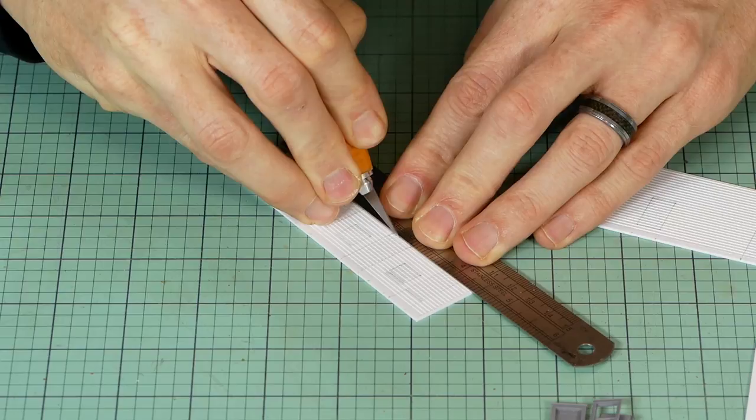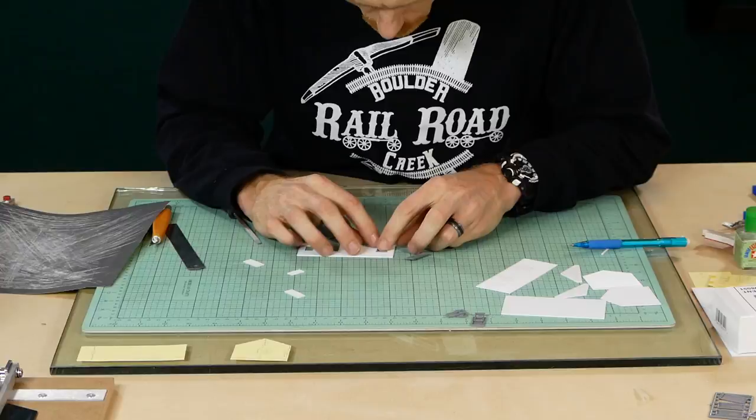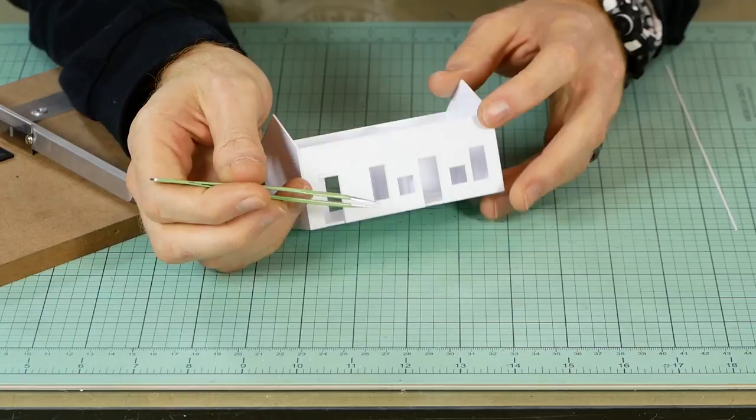I generally cut the openings ever so slightly smaller than required. For example this door needs an opening of 10.3 millimeters but I'll measure and cut 10 millimeters and then carefully sand the rest away until it's a near perfect fit. I do this for all the openings. It's just a matter of taking your time and being patient because it's easy to make a mistake here. Measure twice, cut once.